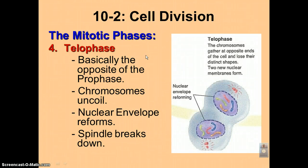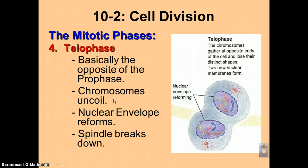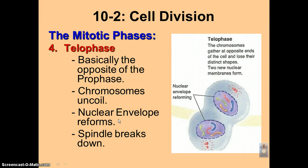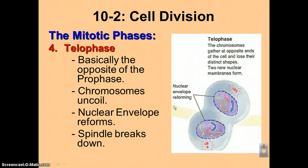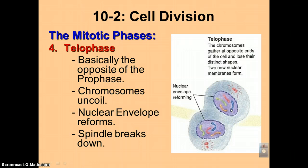Telophase is essentially the opposite of prophase. In prophase the chromosomes coiled up — in telophase they're going to uncoil. In prophase the nuclear envelope broke down — in telophase it's going to reform. The spindle was forming during prophase — in telophase it's going to break down because we don't need it anymore. In this picture you can see the chromosomes beginning to uncoil into long threads of DNA, and there are very few spindle fibers left as they're being broken down.